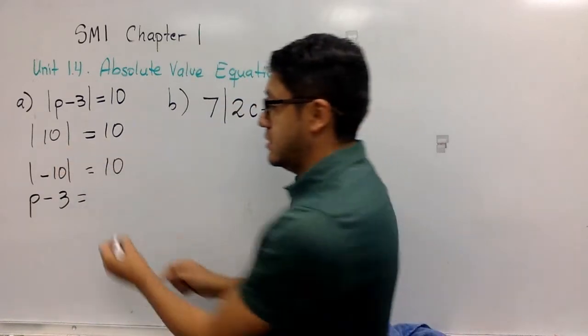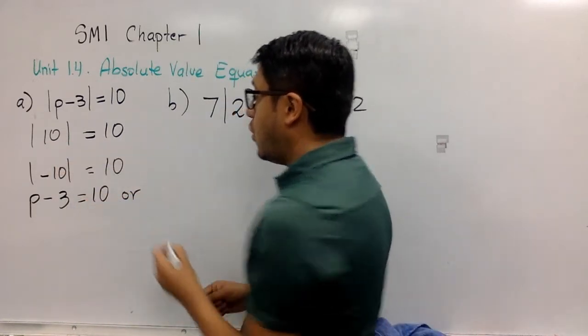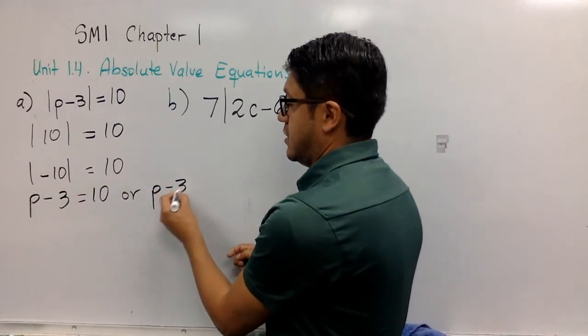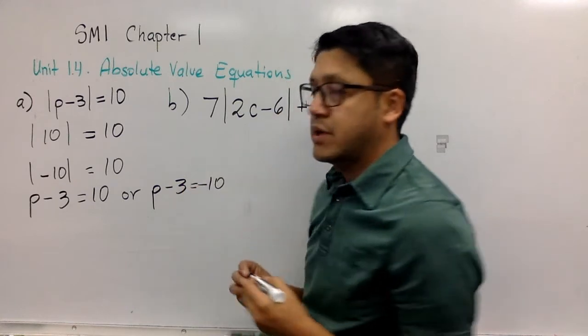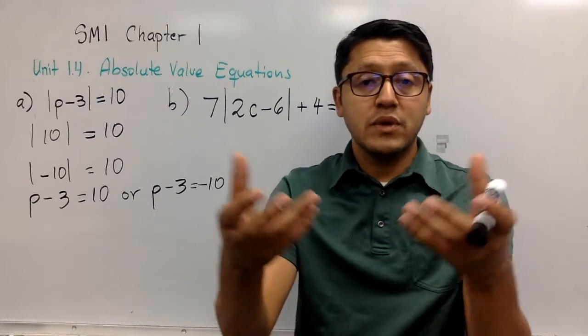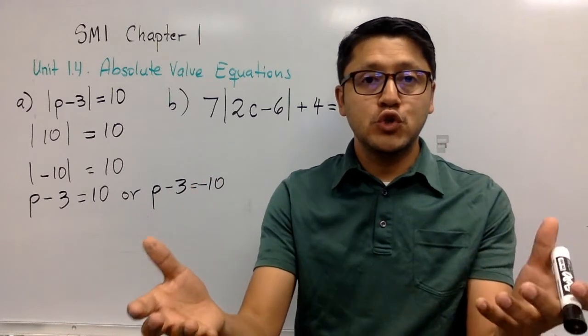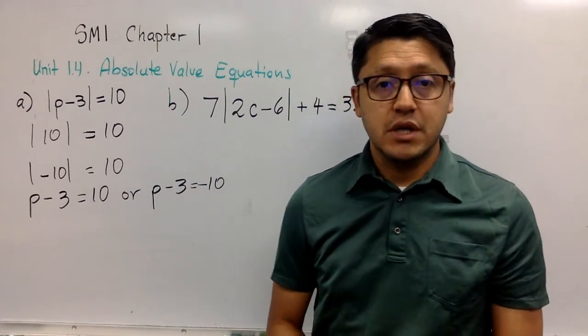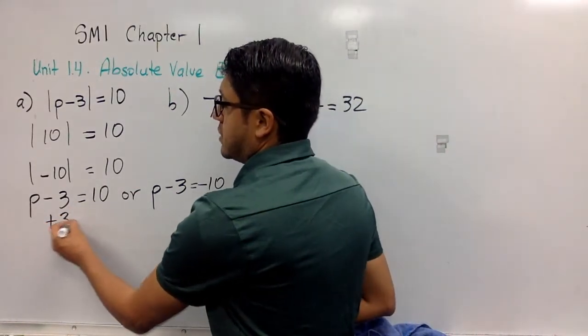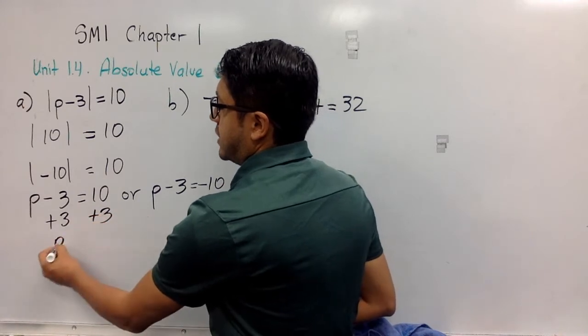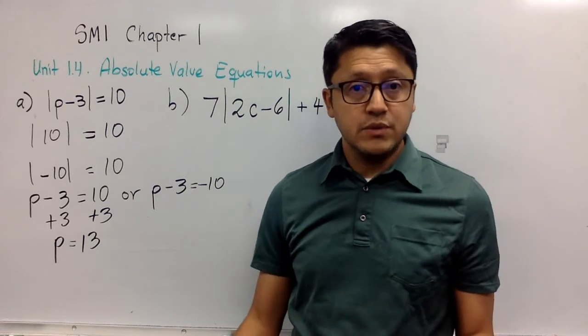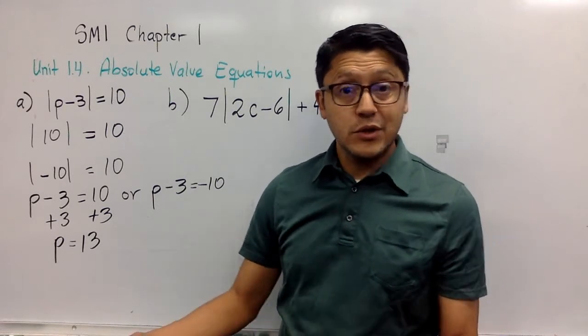What I'm doing here is as I do this analysis, then I will have to solve two simple equations. Now you can proceed. I'm adding 3, and this is one of the solutions: p equals 13.